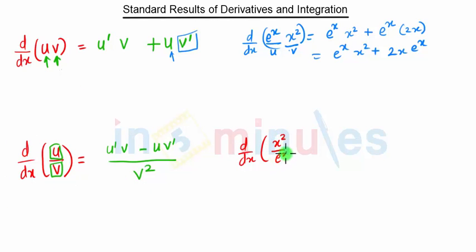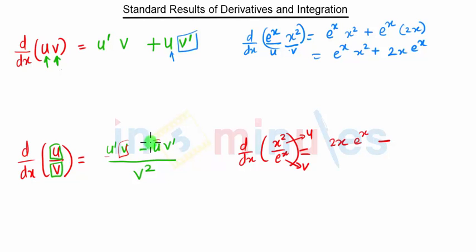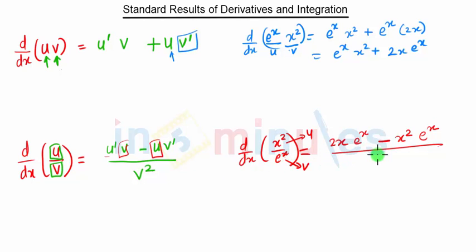For example, for the derivative of x²/e^x, u = x² and v = e^x. The derivative of u is 2x; we keep v (e^x) as it is. Minus: we keep u (x²) as it is and take the derivative of v, which is e^x, divided by v² = e^(2x). So the result is (2x · e^x − x² · e^x) / e^(2x).